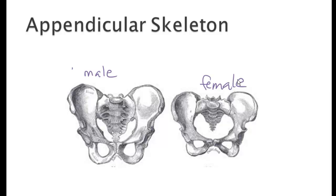They both have an ilium, the iliac crest, the greater sciatic notch, the acetabulum, the obturator foramen, the pubic bone, the ischium, the sacrum, and the coccyx. The difference doesn't lie in which bones they have — the difference is the size of the opening between the two ilium. In females, it's much larger, and that makes sense because females have to fit a baby through there. Males don't have to worry about that. In males, generally, most every bone is just a little bit larger.